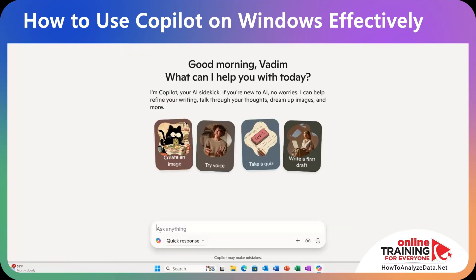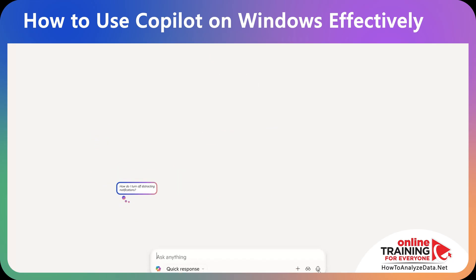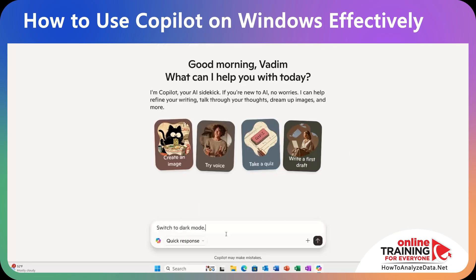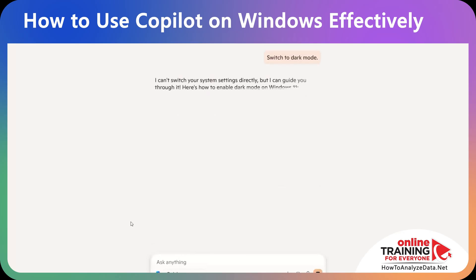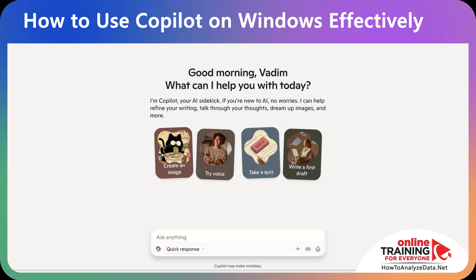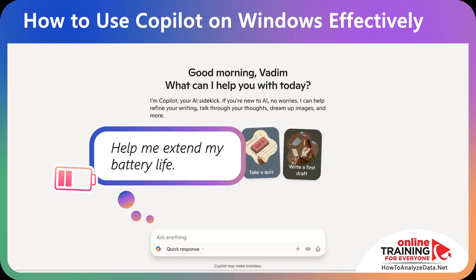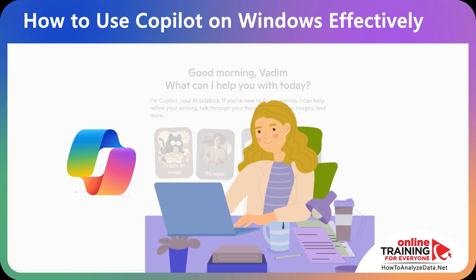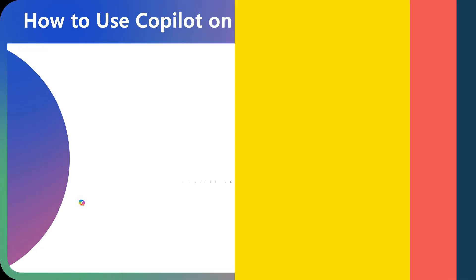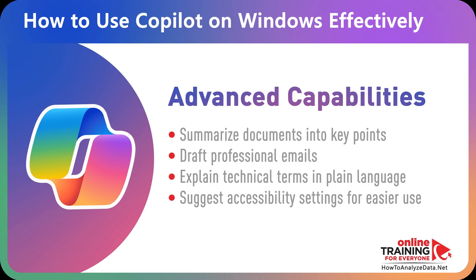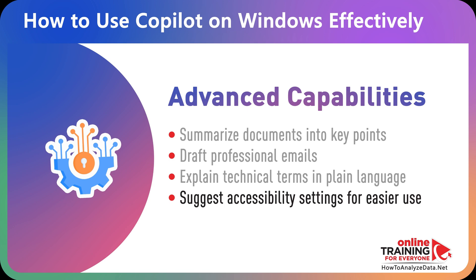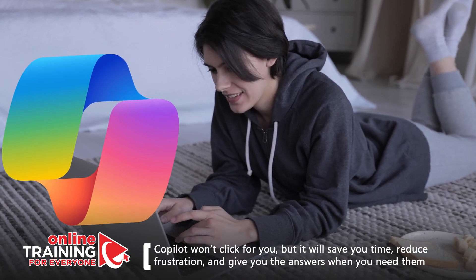Are you struggling with too many notifications? Just ask: 'How do I turn off distracting notifications?' Copilot suggests cool YouTube videos on the topic as well as specific instructions. Here are some other prompts to use Windows effectively: if you want dark mode or high contrast, just prompt 'Switch to dark mode' and Copilot will guide you through the steps. Other problems you can solve include sound or microphone issues, running out of storage, battery draining too fast, apps freezing or crashing, security worries, multiple monitors not aligned correctly, or accidentally deleted files. Beyond fixing problems, Copilot can also summarize documents, draft professional emails, explain technical terms in plain language, or suggest accessibility settings.